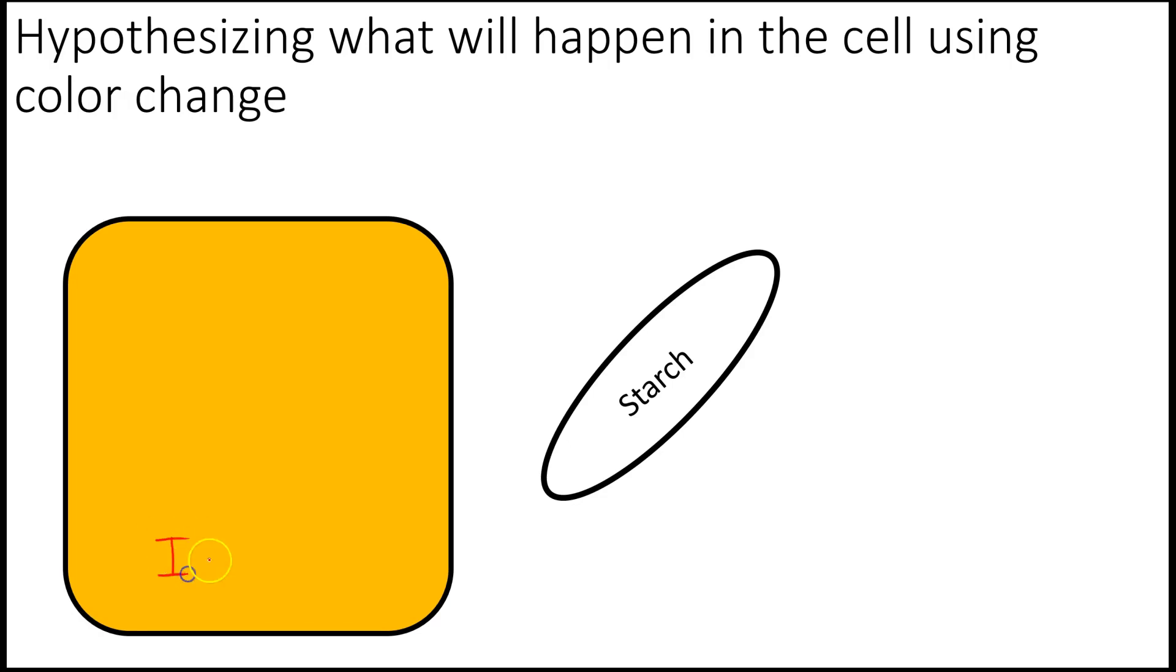The first example is walking you through the color changing experiment we did. We took a cup of iodine and an artificial cell full of starch and put that artificial cell containing starch into the iodine bath. For starch, you have to remember that's a chain of monosaccharides, a branching chain, so it's rather large, so that starch is not going to be able to get out of that artificial cell.